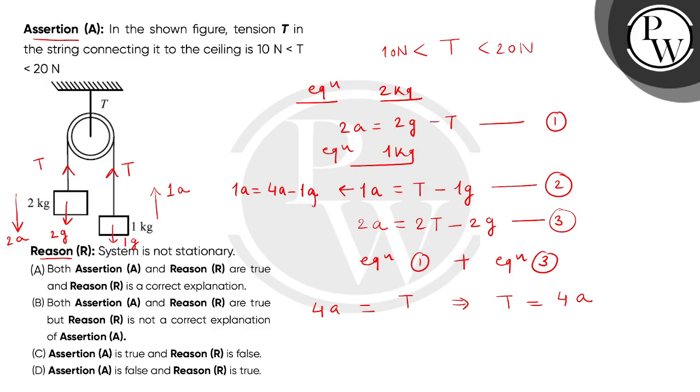This is 1g, so here we get 3a equals to g, which means a equals to g divided by 3. So here we get the tension: 40 divided by 3, which equals approximately 13.3 newtons.